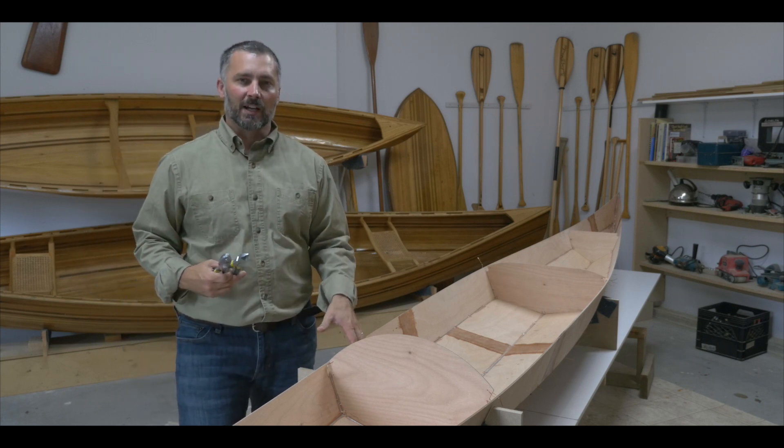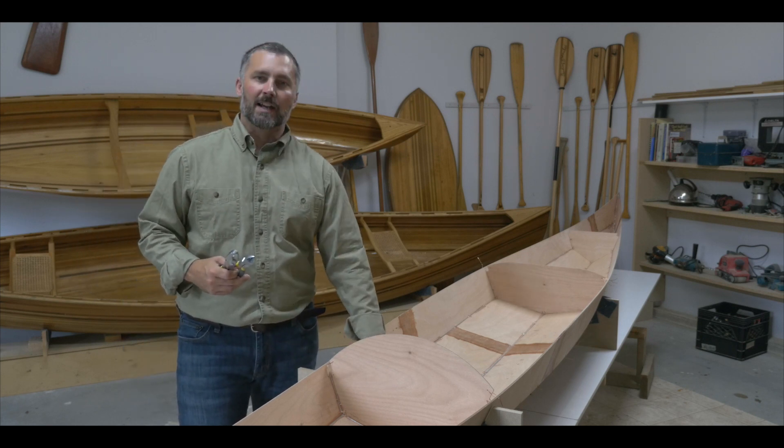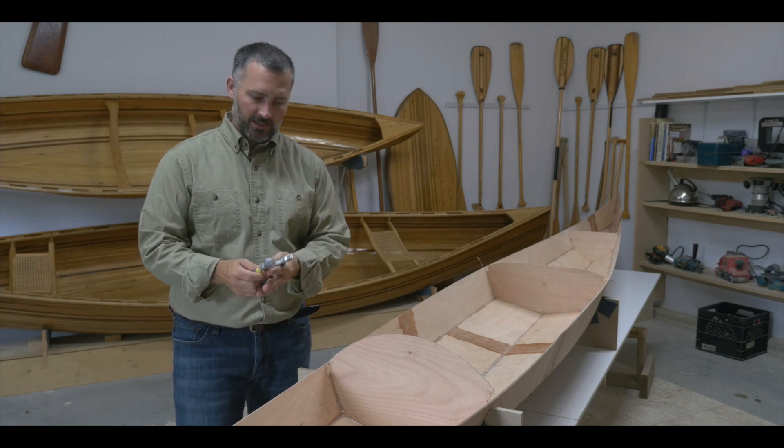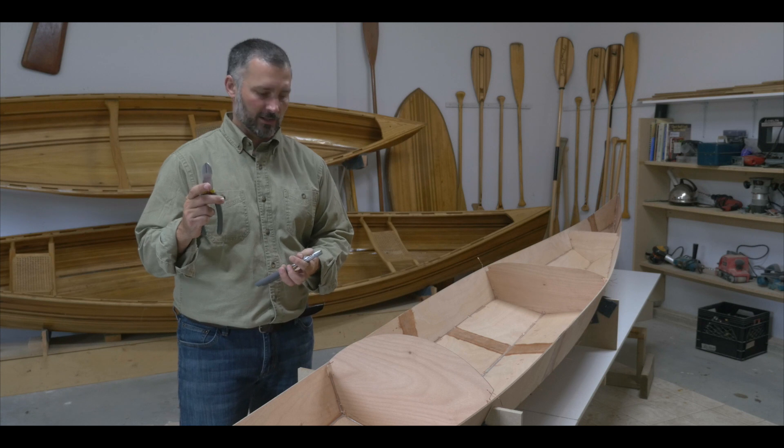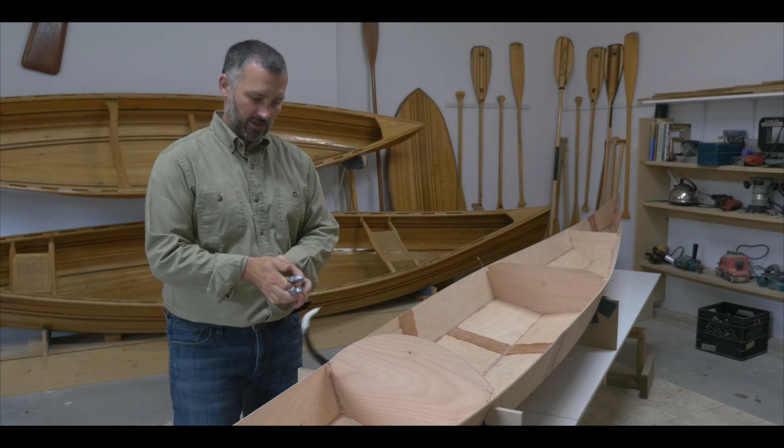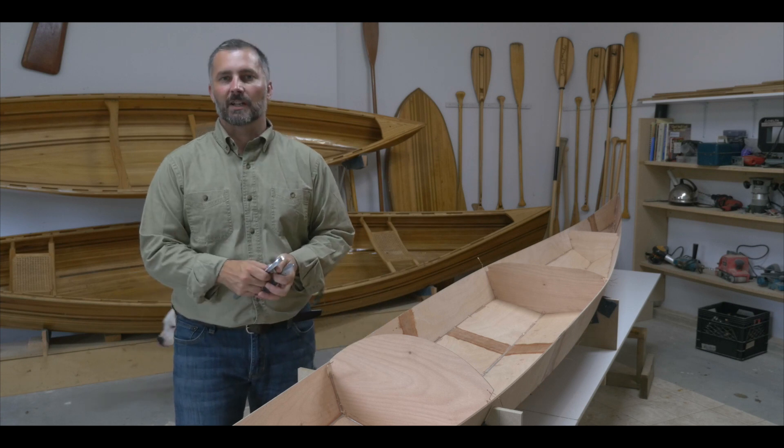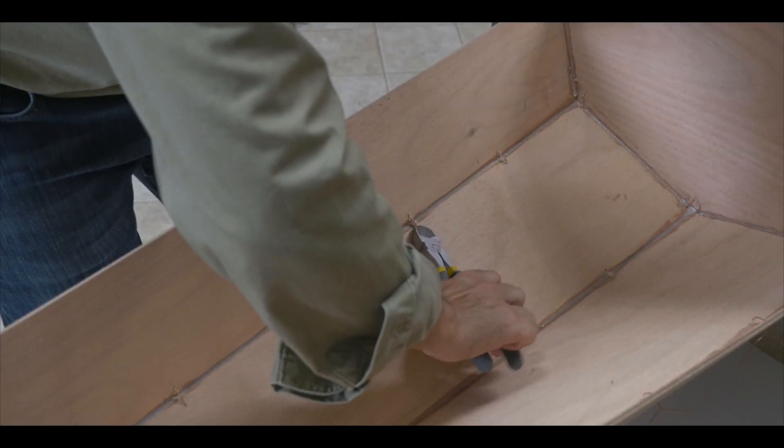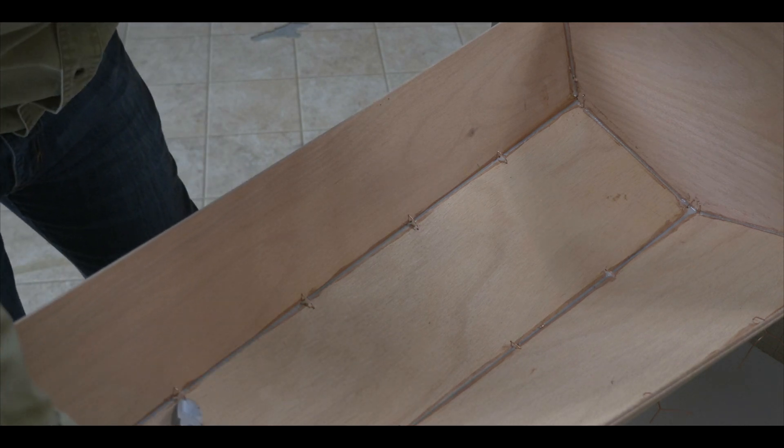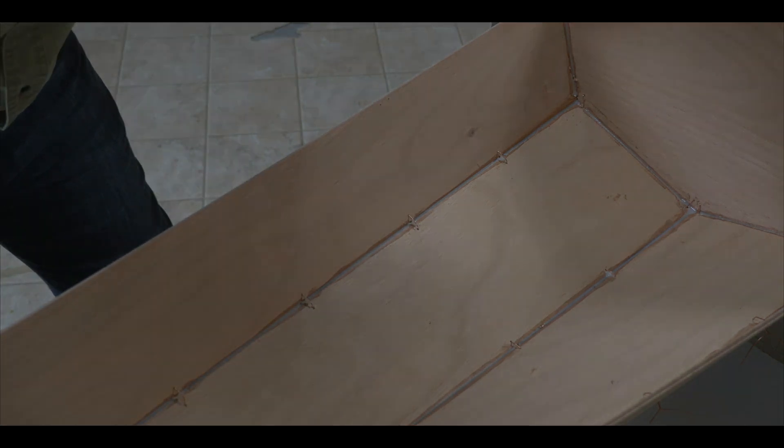The epoxy tack welds have cured overnight and they're good and solid now, so I'm going to go ahead and remove the copper wire. I'm going to use a pair of small wire cutters and also a pair of pliers to just pull the wire through from the outside. We've removed all the copper stitching from the hull.